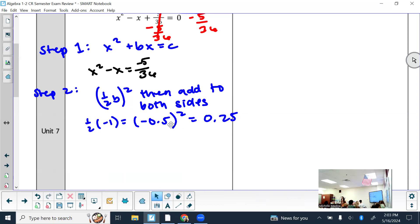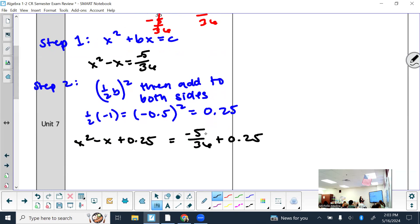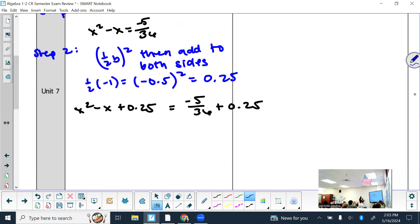These are decimals that end, so you can just use them as a decimal. You never want to have to round too early. So if it's a fraction that gives you a decimal that goes on forever, use a fraction version. But we're going to add this to both sides, which gives me x squared minus x plus 0.25 equal to negative 5/36 plus 0.25. I'll use my calculator to simplify that later.